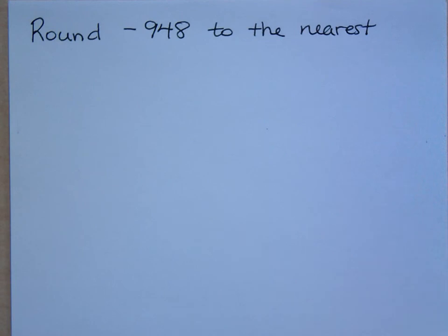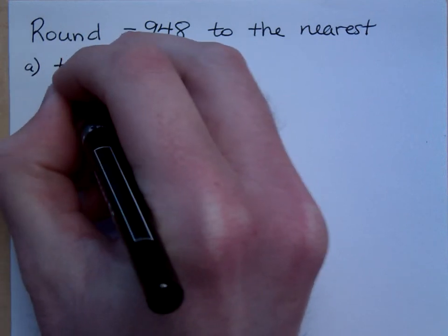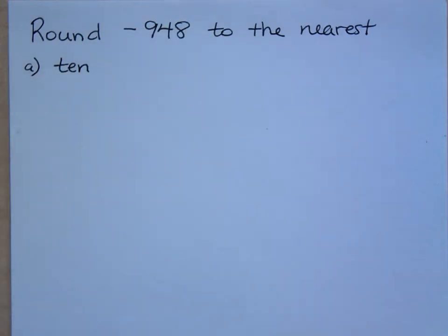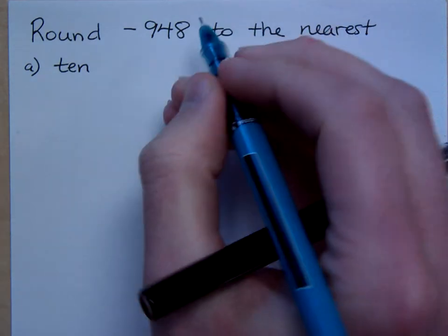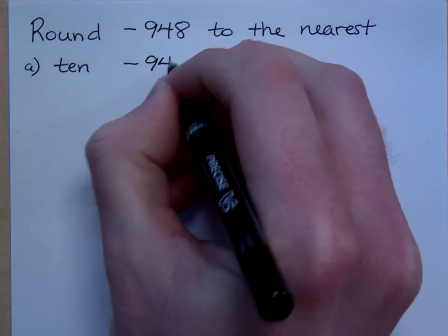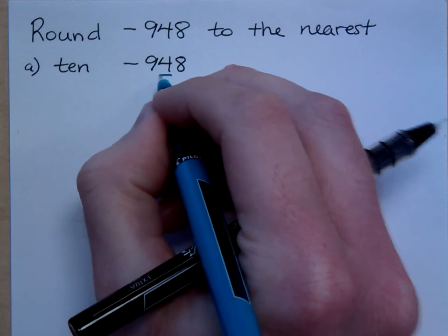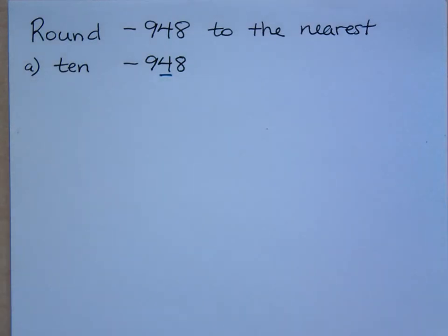Now I want us to take the number negative 948, and I want to round this to the nearest 10. So in order to round, we look for the number that's in the indicated spot, in this case the nearest 10. So let's do this. Here's negative 948. To the nearest 10 means we're looking right here. That's the 10 spot.